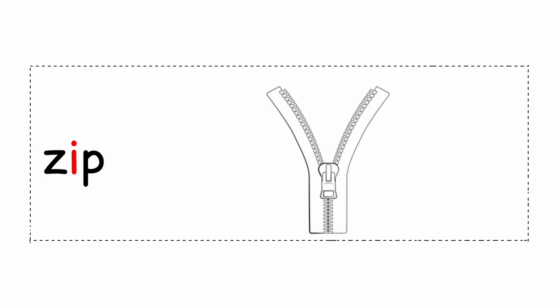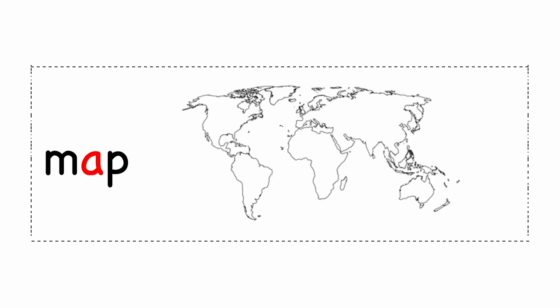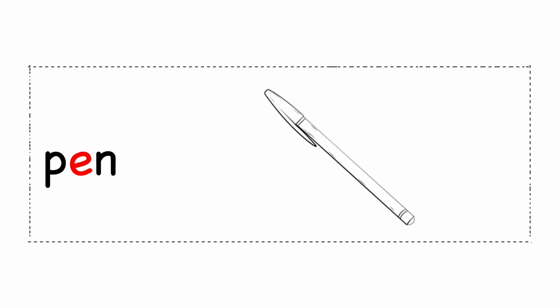Z, I, P — zip. M, A, P — map. P, E, N — pen.